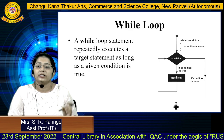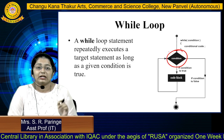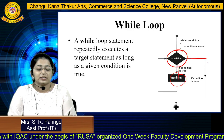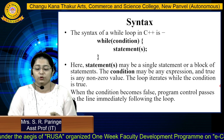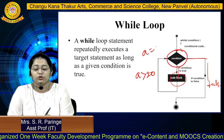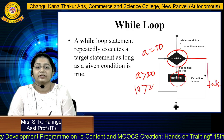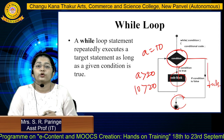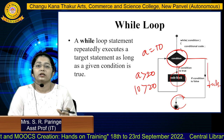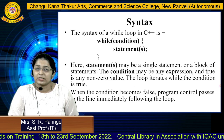As you can see in this flowchart, if the condition is true the code block statements get executed, until and unless this condition becomes false. For example, suppose the condition is a greater than 20 and the value for a is 10. Since 10 is not greater than 20, this condition is false and your program gets cancelled. This is what happens in a while loop — until the condition becomes false you get the output.